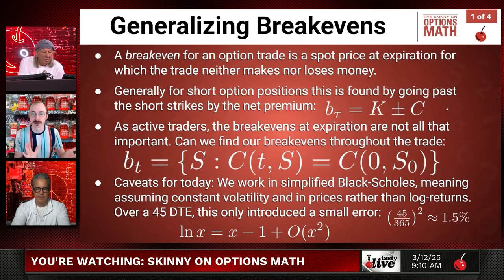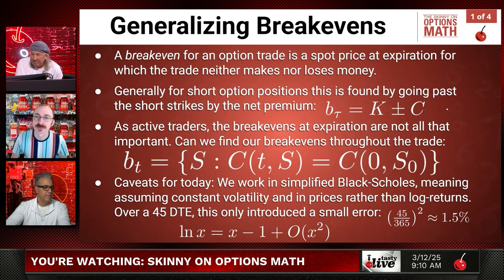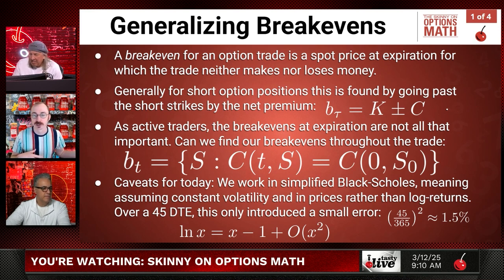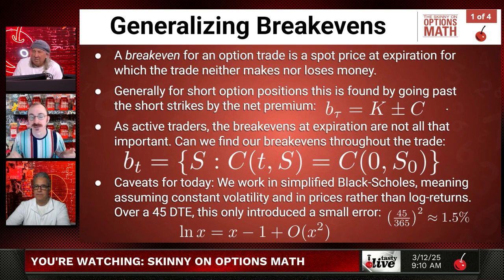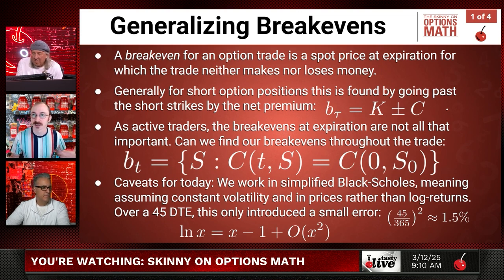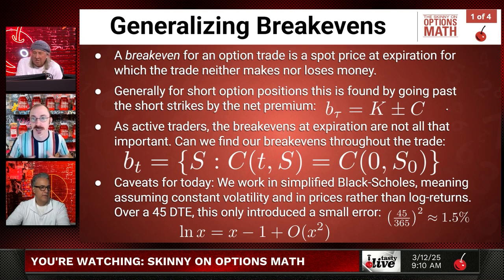Throughout the length of the trade, where your profit region and where your pain region is — as you worked out yesterday — a break-even for an option trade is the spot price at expiration for which the trade will neither lose nor make money. For short option positions, you find that by going past the short strike by the premium: take K and then, depending on whether it's a put or call, add or subtract the credit.